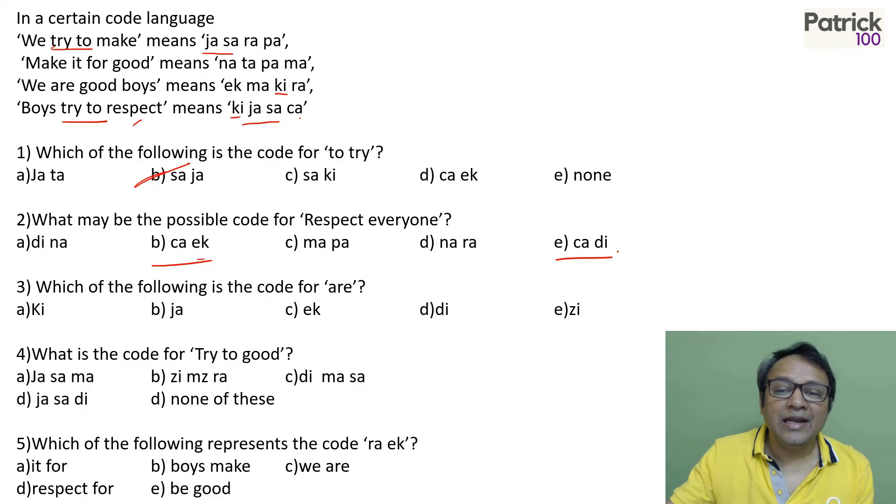Now EK and DI. The code for everyone has to be new. It can't be EK because EK is already there in the third line. So EK is not possible. So DI is the answer. Because the code for everyone should be new. It should not be present because everyone is a new word.